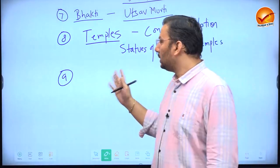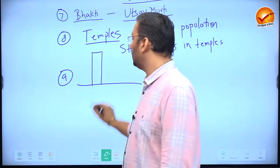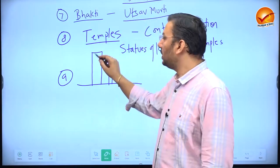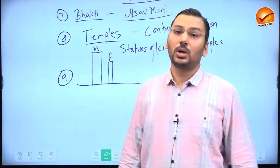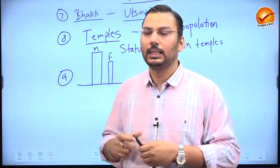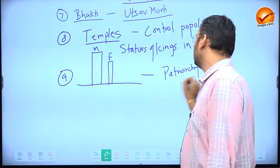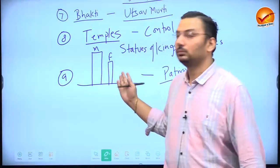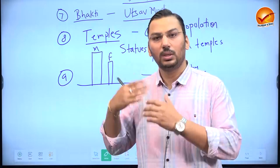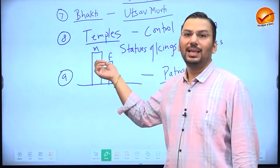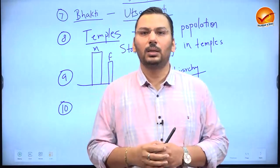Looking at utsav murtis and statues of early medieval India, there is a feature where male bodies are made much bigger and more prominent than female bodies — the bulk, muscles, and features are far more prominent than the female body. This indicates the rising patriarchy in society. In Pallava, Chola, and later sculpture, wherever you see statues, there is a prominence of the male body with a relatively small female body — a symbol of patriarchy.